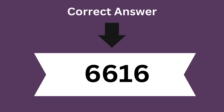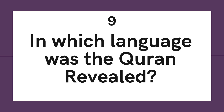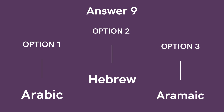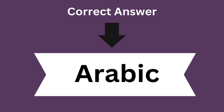Question 9: In which language was the Quran revealed? Option 1: Arabic. Option 2: Hebrew. Option 3: Aramaic. And the correct answer is Arabic.